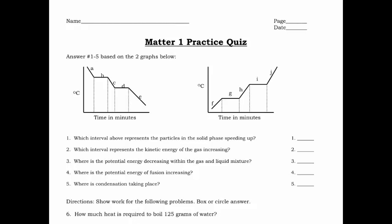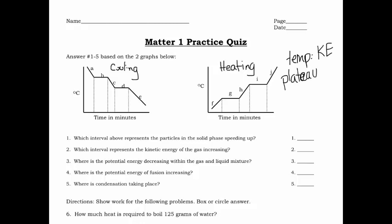The first five questions are going to be based on heating or cooling curves. It's probably a good idea to label them to start with. The first one on the left is a cooling curve — everything is decreasing. On the right is a heating curve. At the plateaus is where you have a phase change. Where you have sloped regions of the graph, that's where you have temperature changing. Whenever temperature changes, kinetic energy is changing. At the plateau, that's going to be a potential energy change — that's when phase is changing.